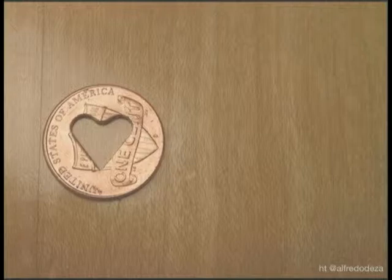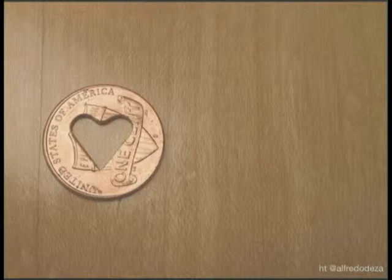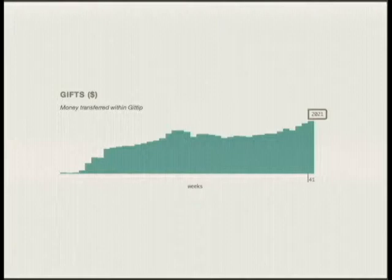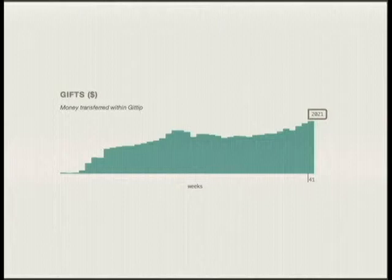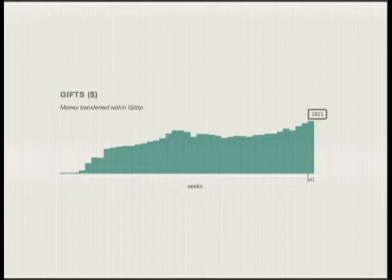So what is Gittip? Gittip is a crowdfunding platform designed for sustainable crowdfunding. With Kickstarter you get a one-time shot in the arm; with Gittip it's ongoing weekly sustainable crowdfunding. This chart shows that Gittip has been around for 41 weeks. It runs every week — every Thursday I run a script that charges people's credit cards and pays out to people's bank accounts. Yesterday we moved to $2,000 a week, which is a little bit of a milestone.